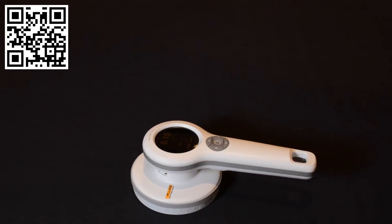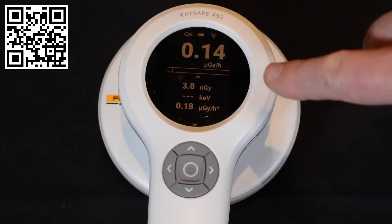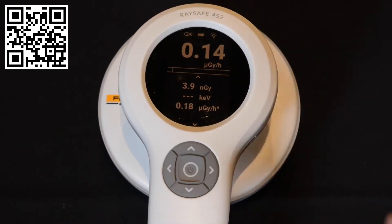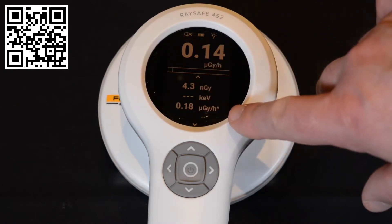The first row always shows the live intensity. Next is the integrated dose for the measurement. If intensity is high enough, you also get the live mean energy. At the bottom, you have the highest intensity recorded.